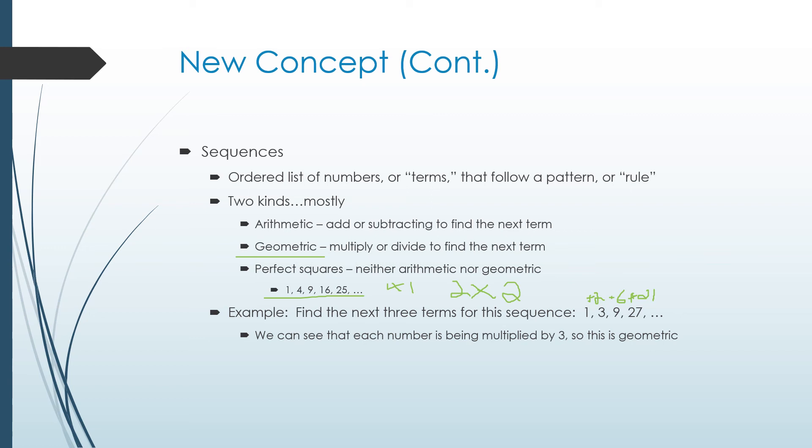One times three is three. Three times three is nine. Nine times three is twenty-seven. On and on and on. So the next three terms, we would just multiply by three. Twenty-seven times three is eighty-one. Eighty-one times three is two hundred forty-three. And two forty-three times three is seven twenty-nine.